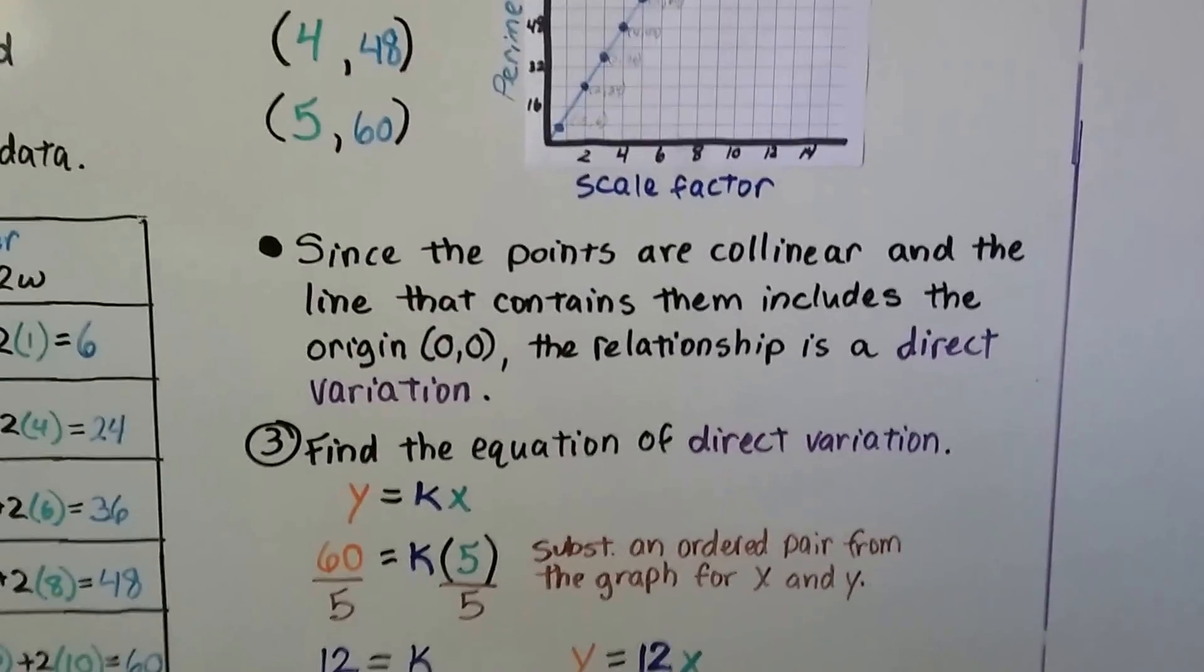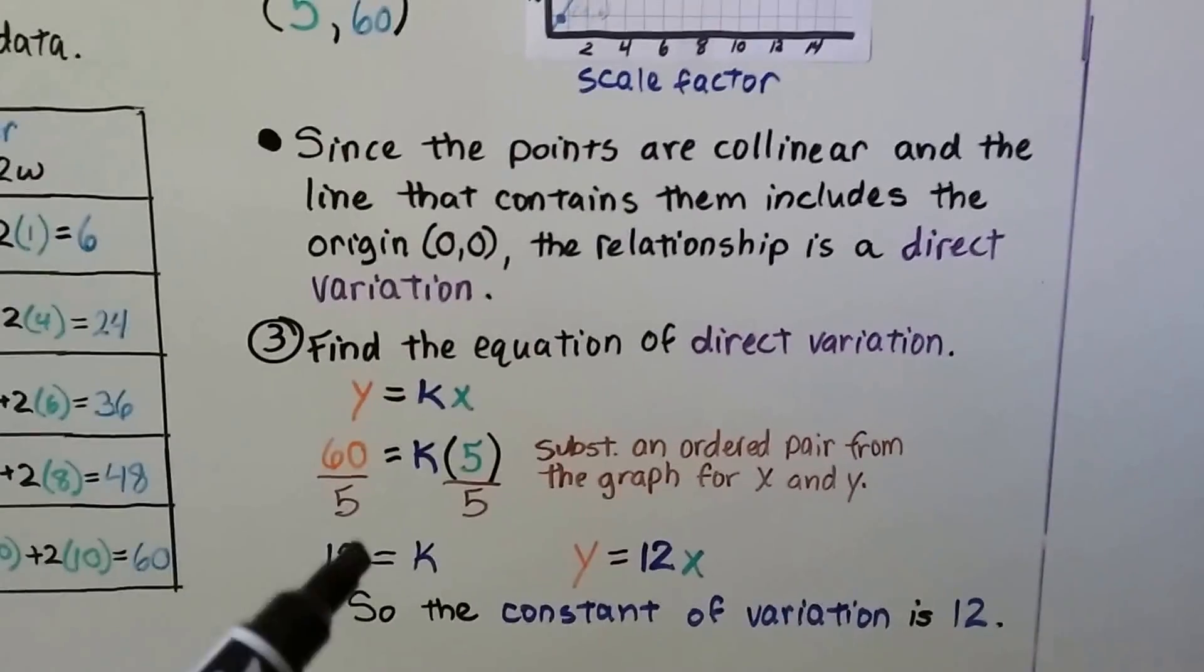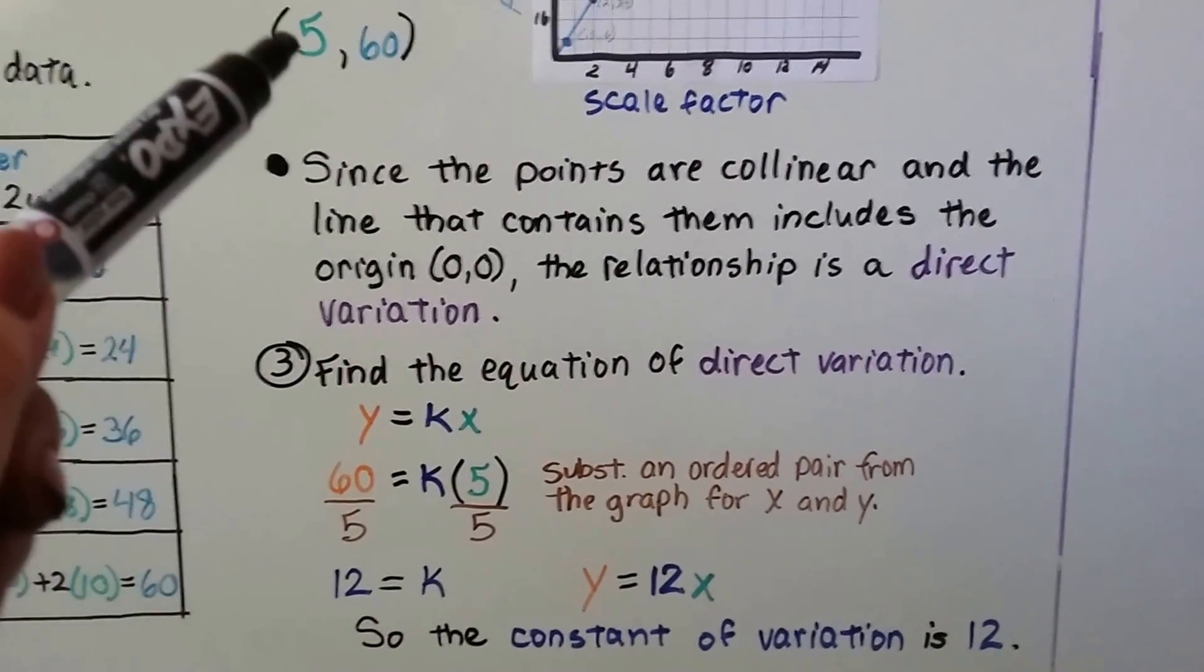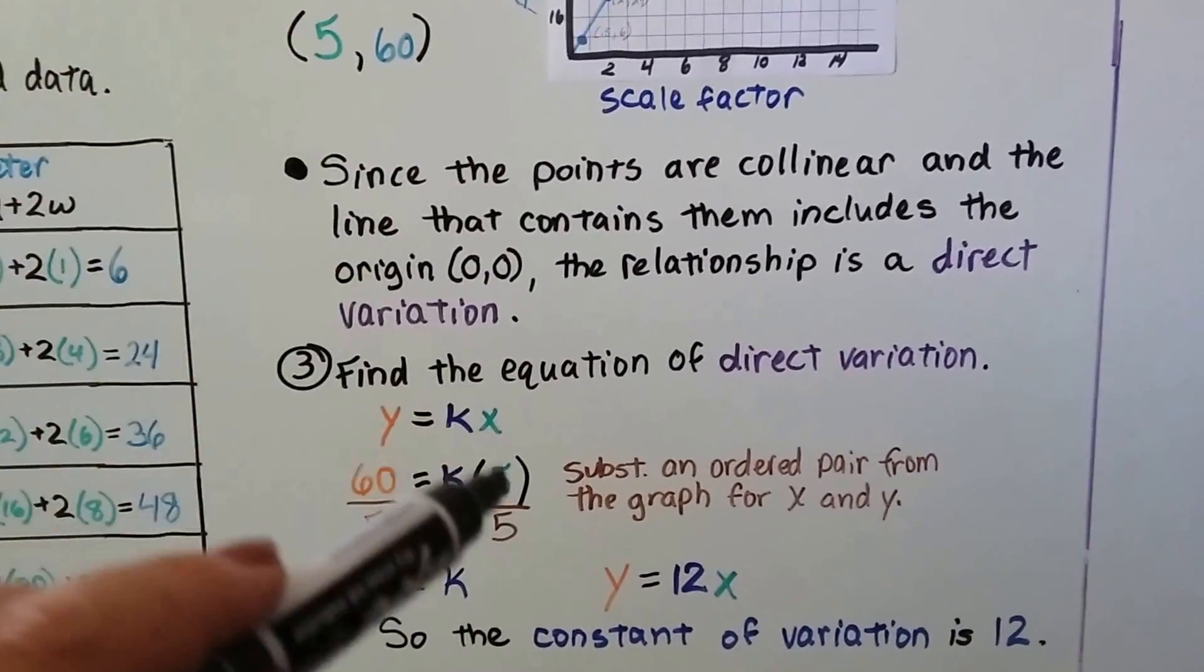We find the equation of direct variation. It's y equals kx, and we can substitute an ordered pair like 5 and 60. So 60 is our y and 5 is our x.